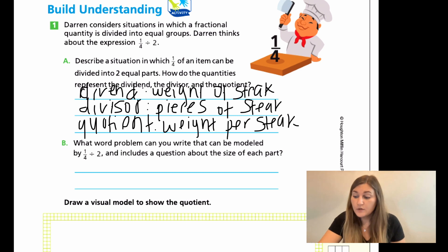So for B, it says what word problem can you write that can be modeled by 1/4 divided by 2 and includes a question about the size of each part? So I decided to go a little bit different with my word problem. I decided to talk as a child because that's how you guys are going to be doing this. So I said, mom bought 1/4 pound steak to split with dad. What weight is each of their steaks? Not going to take the time to write that down, and especially because my pen is acting a little funky right now. I'm just going to say it verbally to you one more time. I just said, mom bought 1/4 of a steak to split with dad. What weight is each of their steaks? That would be giving me the quotient.